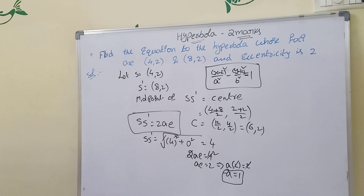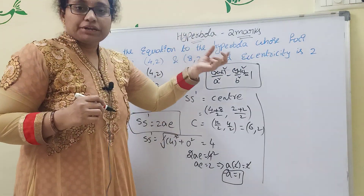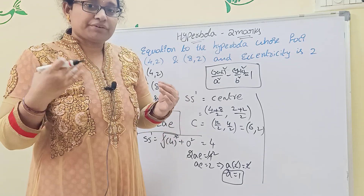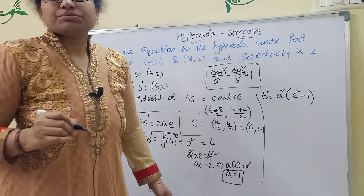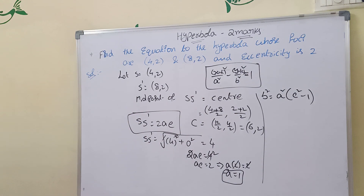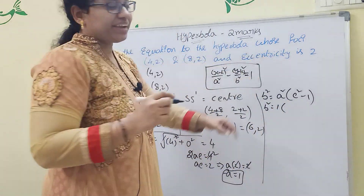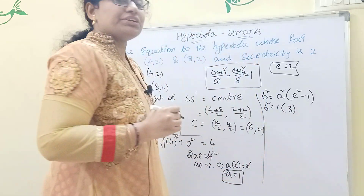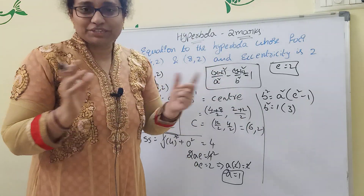Now a = 1. To find b², use the formula b² = a²(e² − 1). Substituting a = 1 and e = 2: b² = 1 × (4 − 1) = 3. So b² = 3. We only need b², not b itself. Now a² = 1 and b² = 3. Apply the general equation to get the required equation of the hyperbola.